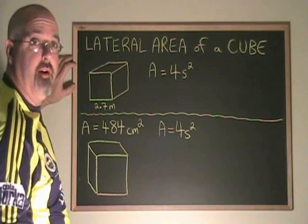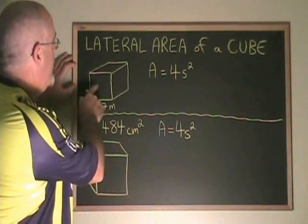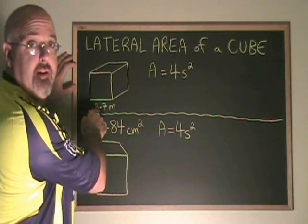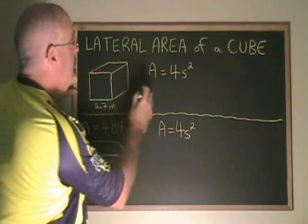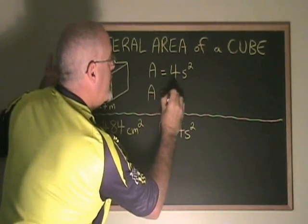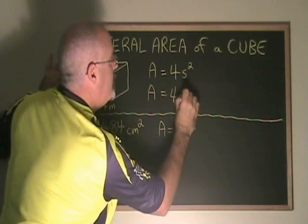Let's do a couple of examples to try it out. Here we have a cube where each side is 2.7 meters in length. So I take the formula and I replace the s with 2.7.